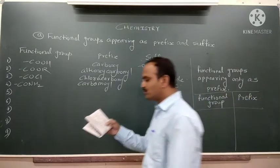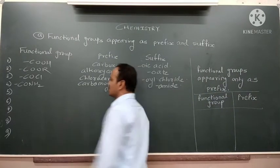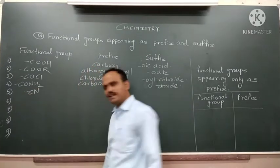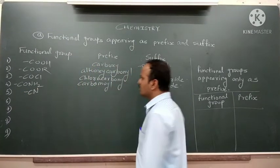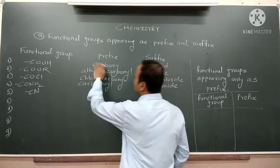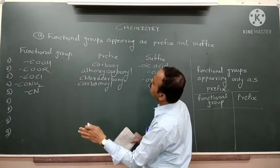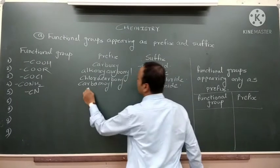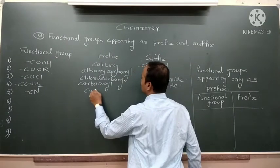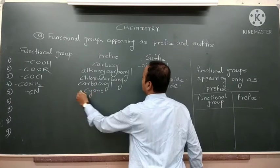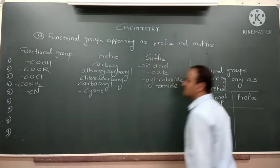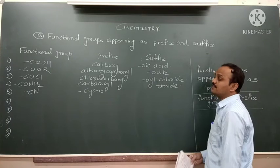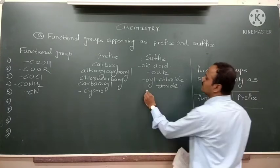The fifth functional group is the nitrile group –CN. When it acts as a substituent, its prefix name is 'cyano'. When it acts as a parent functional group, it is called '-nitrile'.